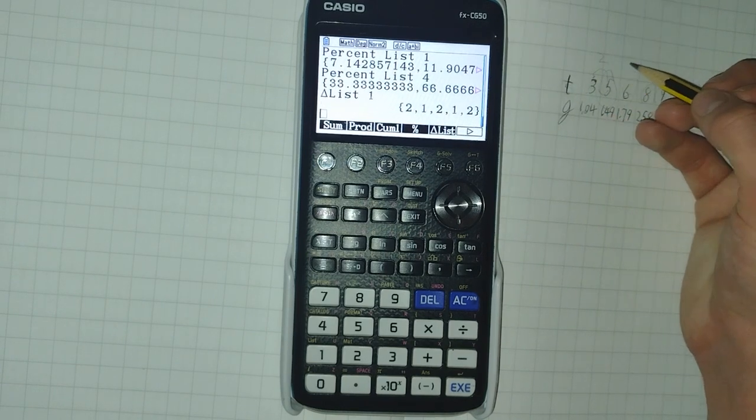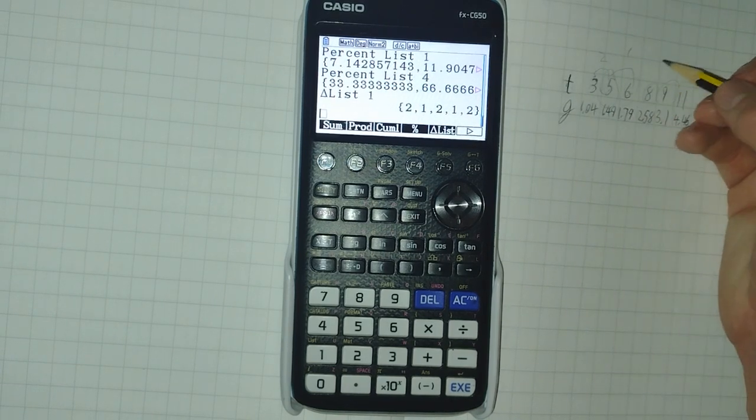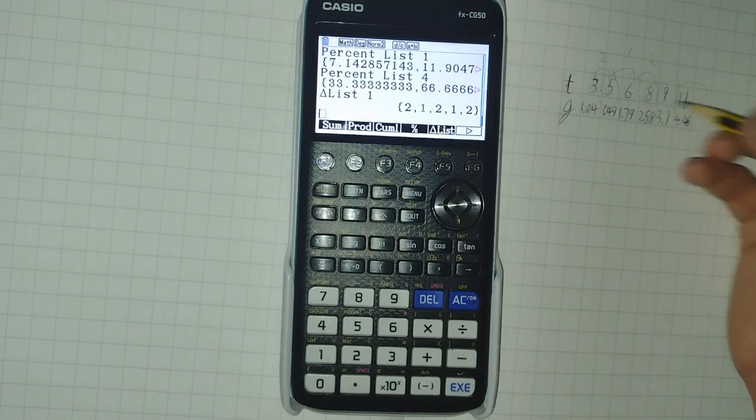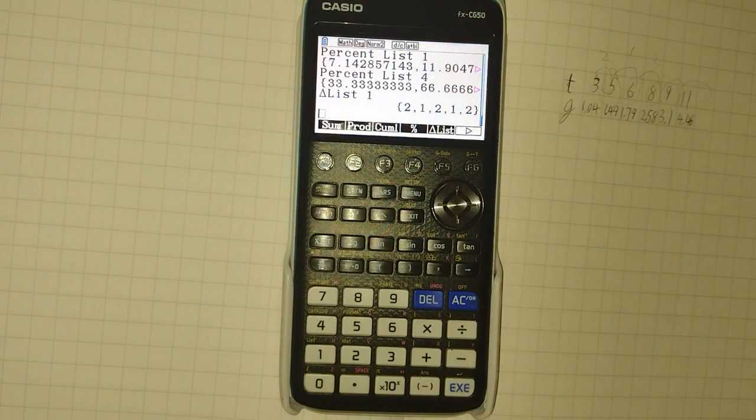And it gets us the difference between each item. So, the difference between three and five is two. Between five and six is one. Between six and eight is two. And so on. This can be very helpful when working with sequences.